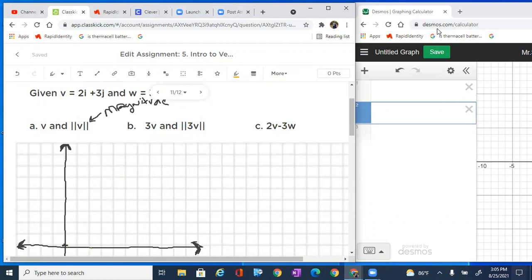So we would go over to the right 2 and up 3. And right here, that tells us what v is with a terminal point right there. So v would be equal to 2, 3, going to that terminal point right there.